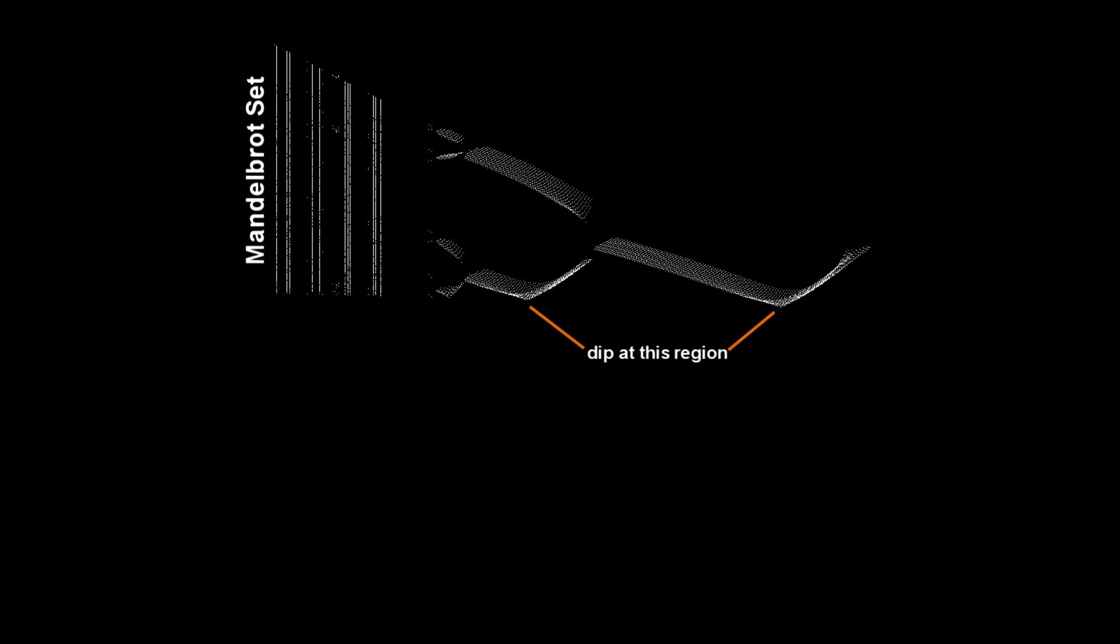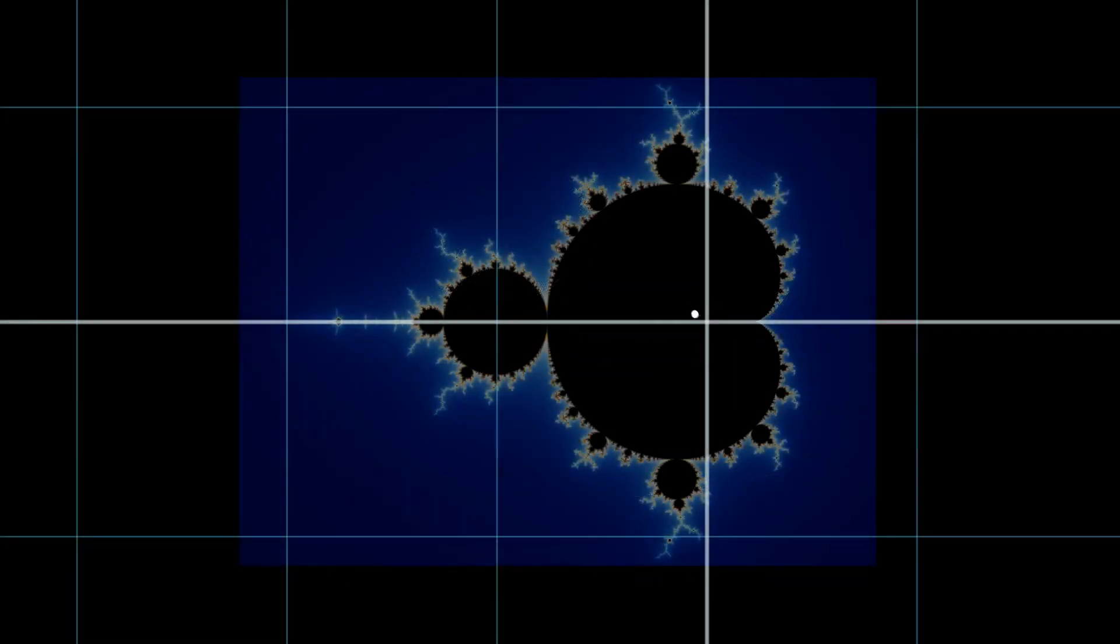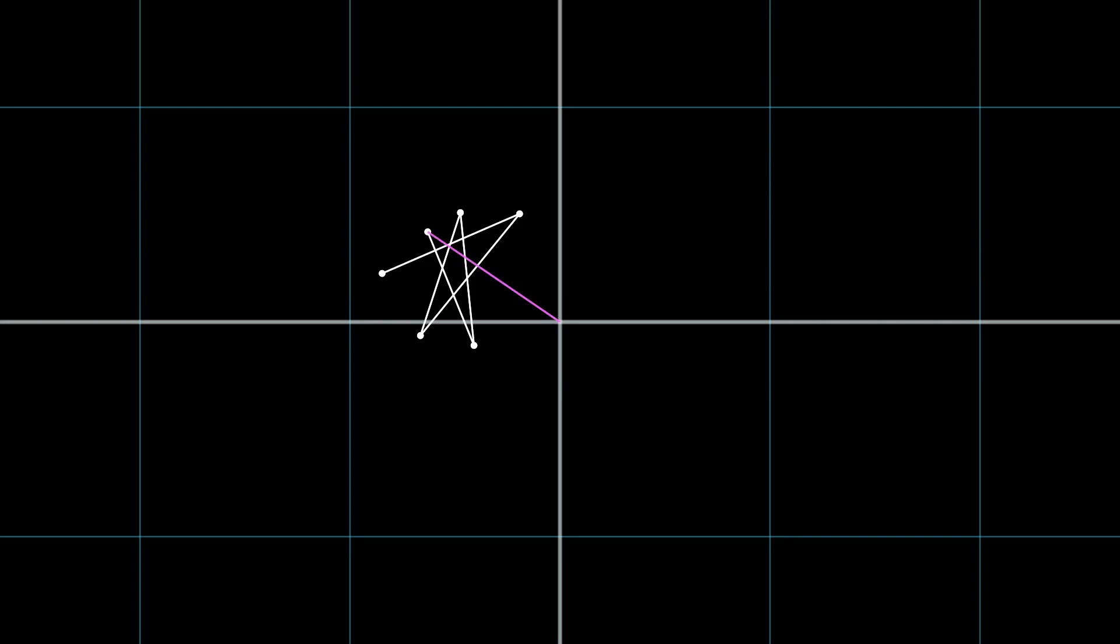You may have noticed that the visualization at the start of this video, although similar, did not look exactly like the logistic map. This is because it was generated by measuring the long term behavior of the modulus, or the distance to the origin. And I suspect that we are losing too much information, such as the direction of each point to the origin.